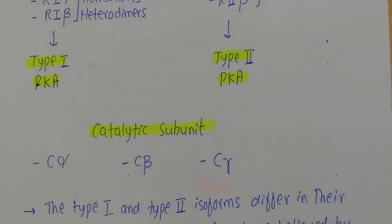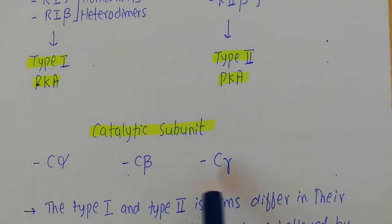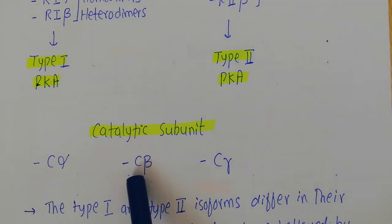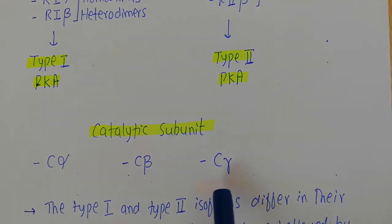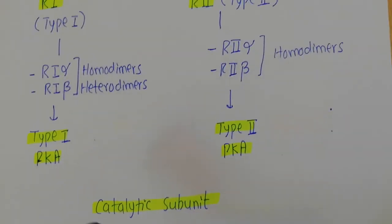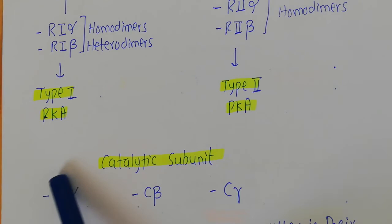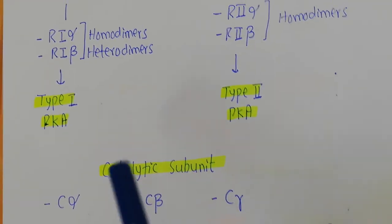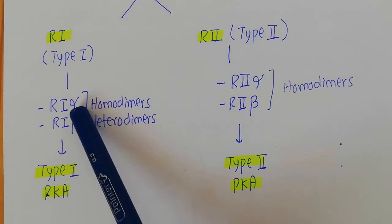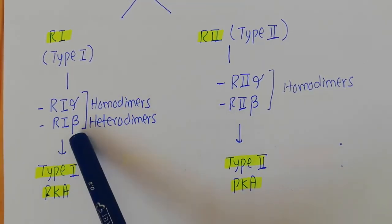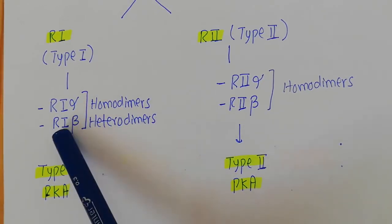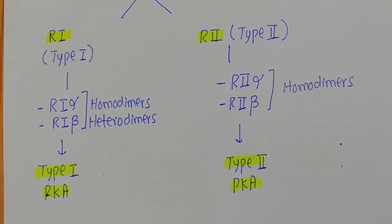For the catalytic subunits, there are three types: C-alpha, C-beta, and C-gamma. So you can have catalytic subunit alpha, beta, or gamma. For example, in a type 1 protein kinase A you can use two C-alpha catalytic subunits along with an R1-alpha homodimer, an R1-beta homodimer, or the R1-alpha/R1-beta heterodimer. This means a variety of combinations are available when building protein kinase A from its regulatory and catalytic subunit options.